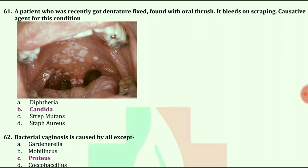Bacterial vaginosis is caused by all except — options are Gardnerella, Mobiluncus, Proteus, or coccobacillus. The answer is Proteus.